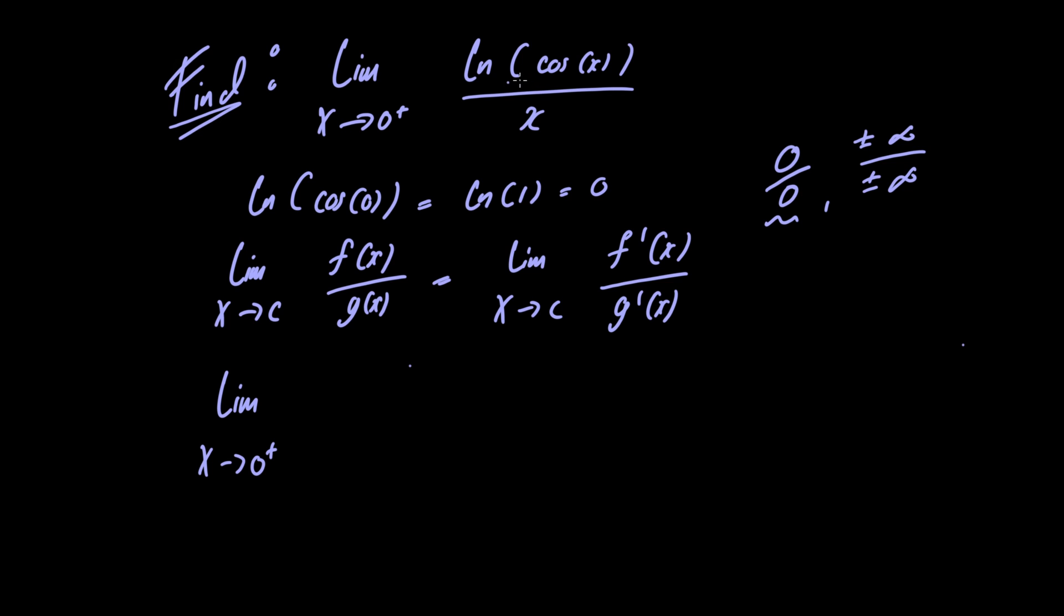The derivative of the natural logarithm of some function is just 1 over that function, and of course the derivative of cosine of x is just minus sine of x, and the derivative of x is just 1.